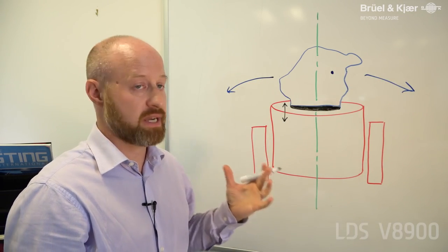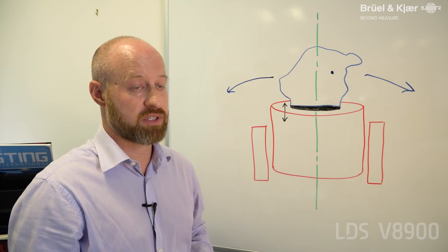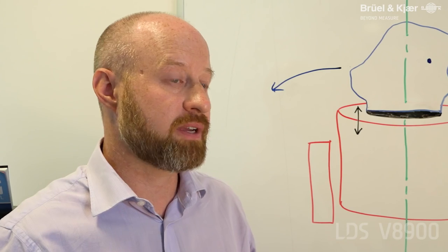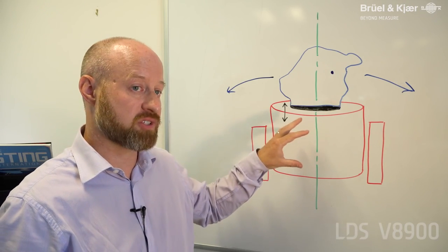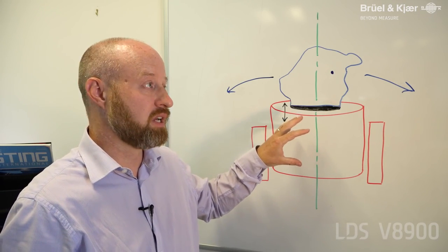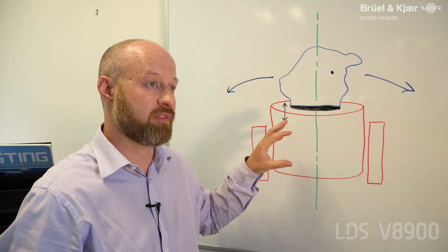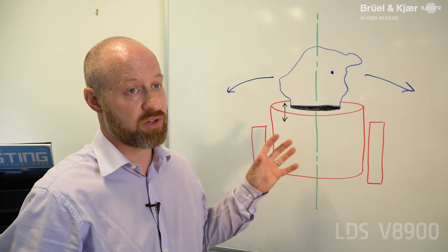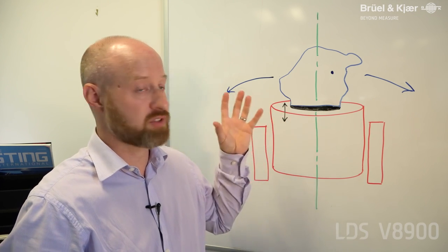For the shaker to be reliable, it needs to withstand those overturning moments. The V8900 is a ground-up all-new shaker that incorporates a hydrostatic bearing inside, very similar to those used in our V900 series high-end water-cooled shakers. This provides a 3 kilonewton meter overturning moment restraint.